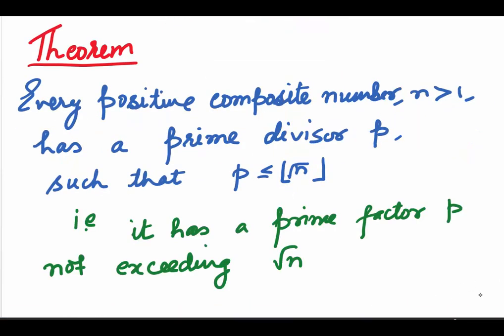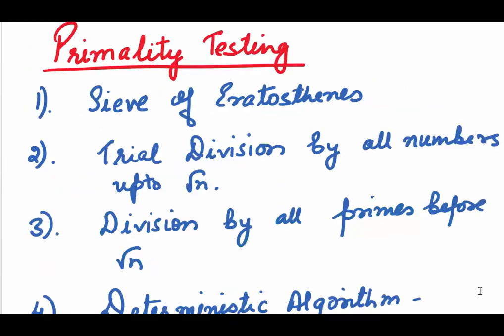You just saw what prime numbers are. Coming to the big question, how do we find whether a given number is prime or not? We call it primality testing. Now, some of the earlier methods used this theorem: Every positive composite number n greater than 1 has a prime divisor p such that p is less than equal to the floor function of root n. In other words, every positive composite number n greater than 1 has a prime factor p not exceeding root of n.